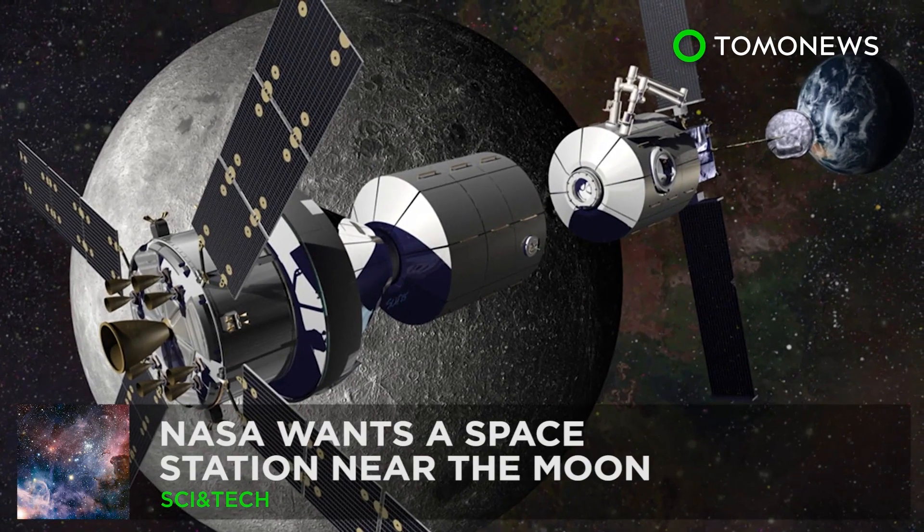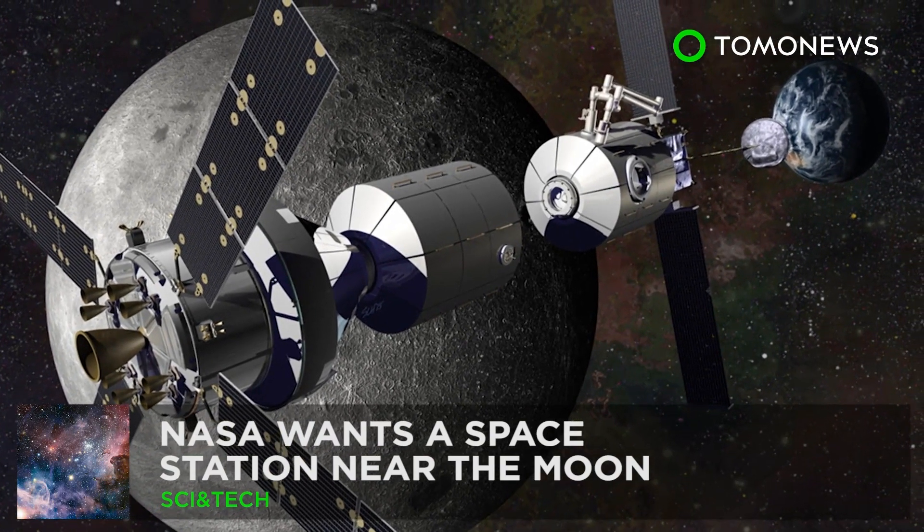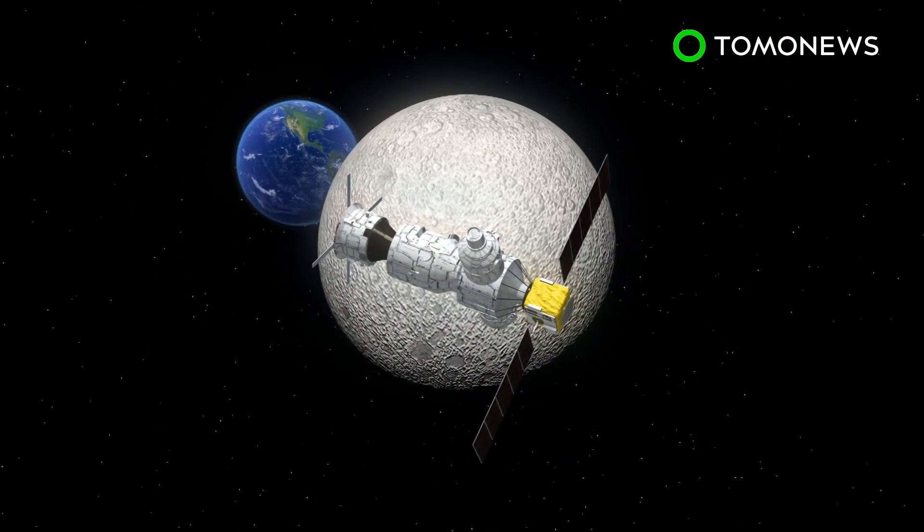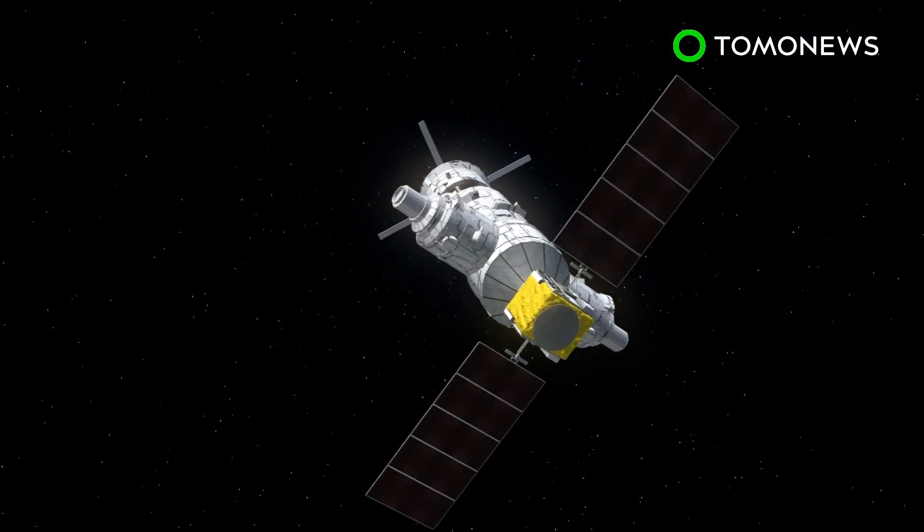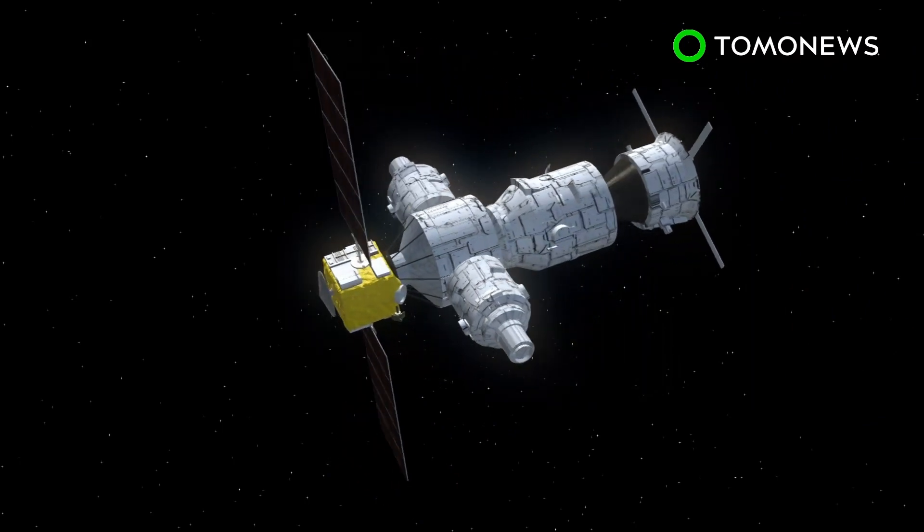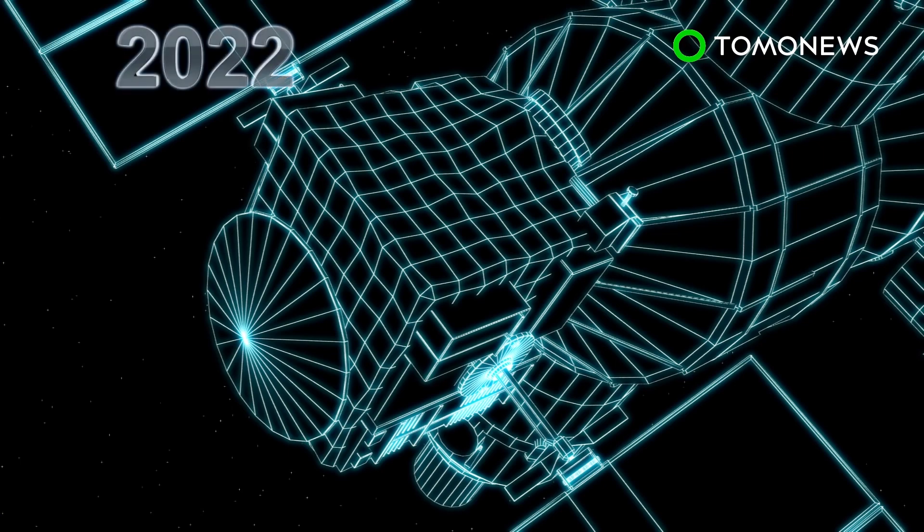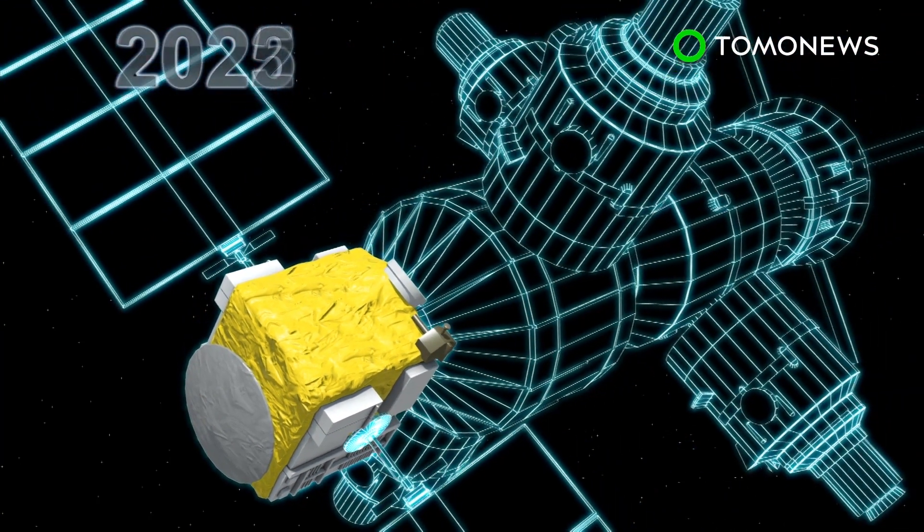NASA wants a space station near the Moon. A moon station? Yeah, why not? NASA says it plans to build a station for astronauts orbiting the Moon. The project is called the Lunar Orbital Platform Gateway. NASA's 2019 fiscal year budget request calls for launching the first element, the Power and Propulsion Module, into space in 2022.